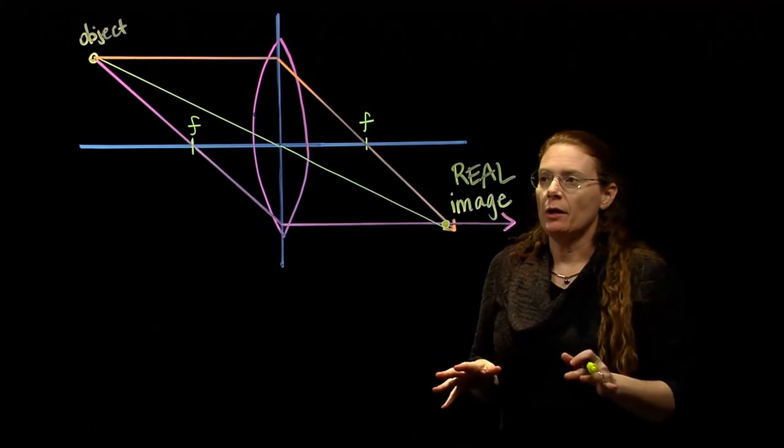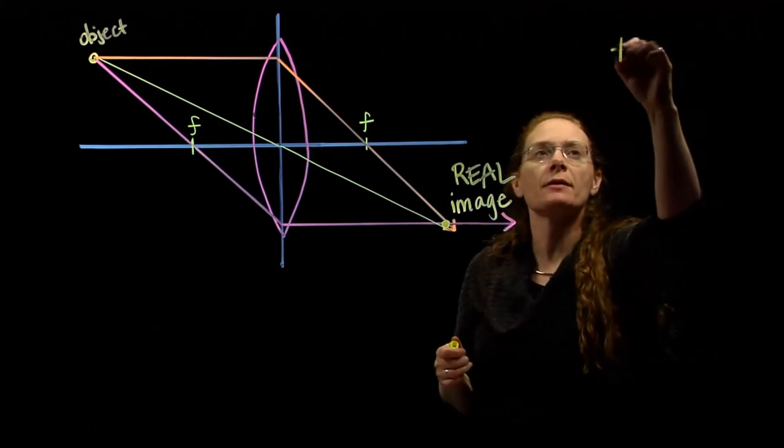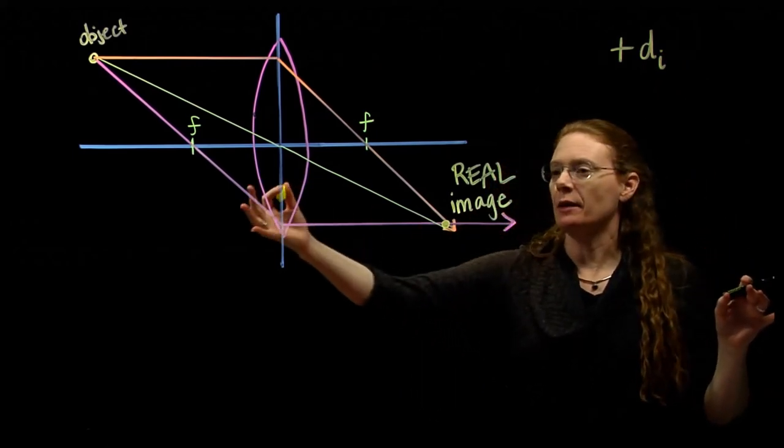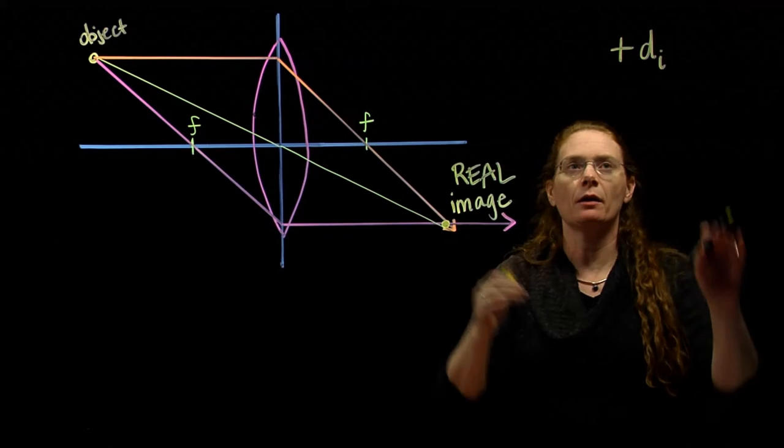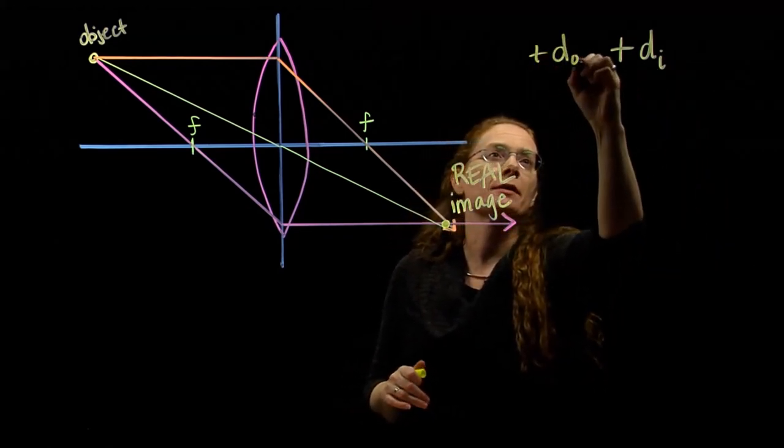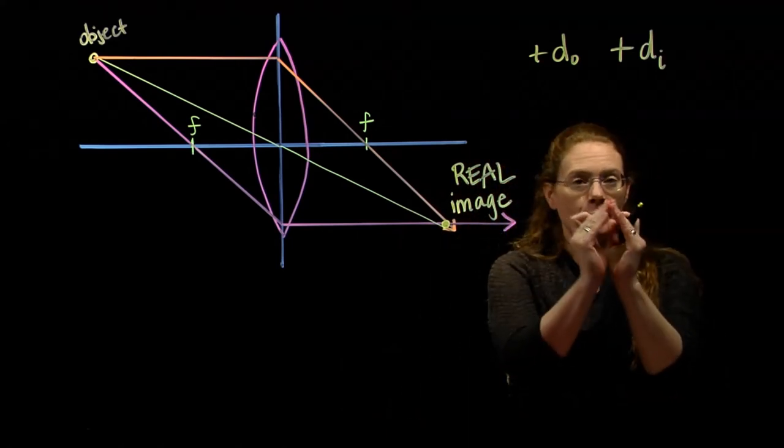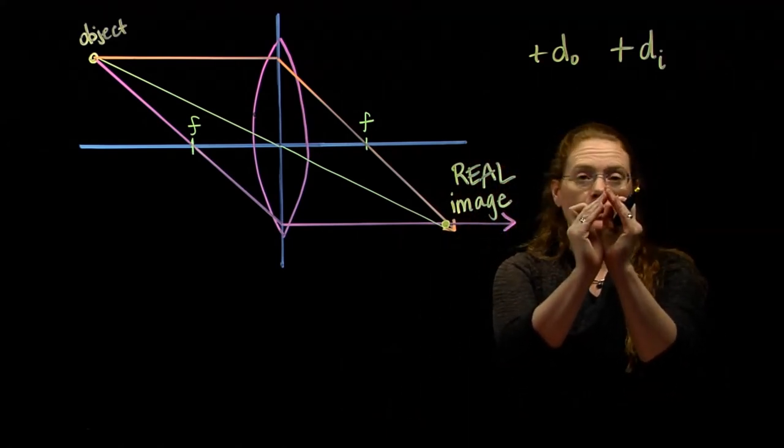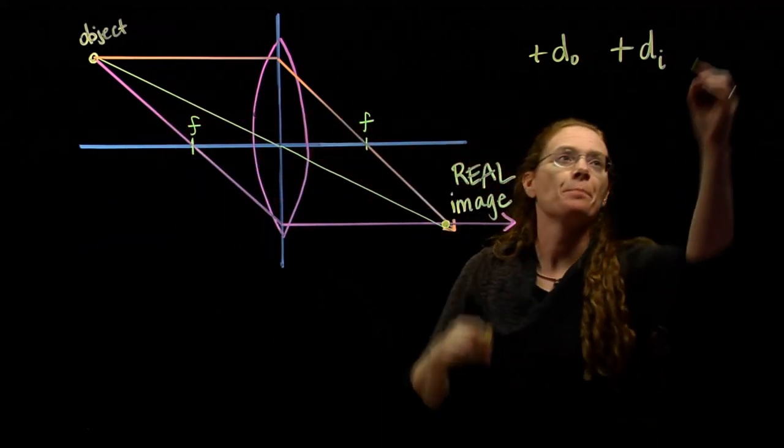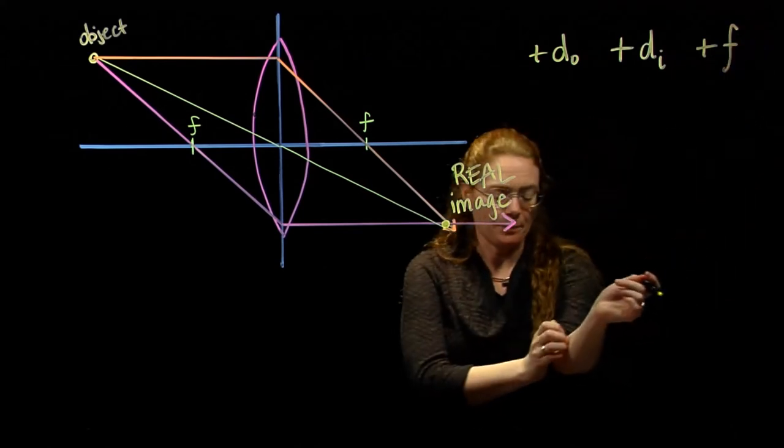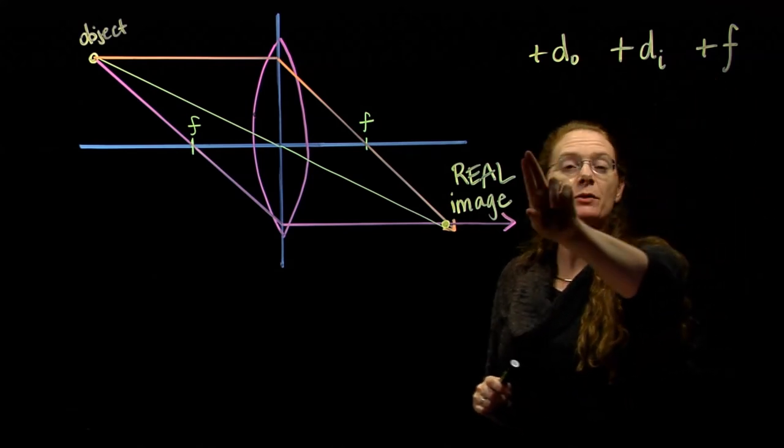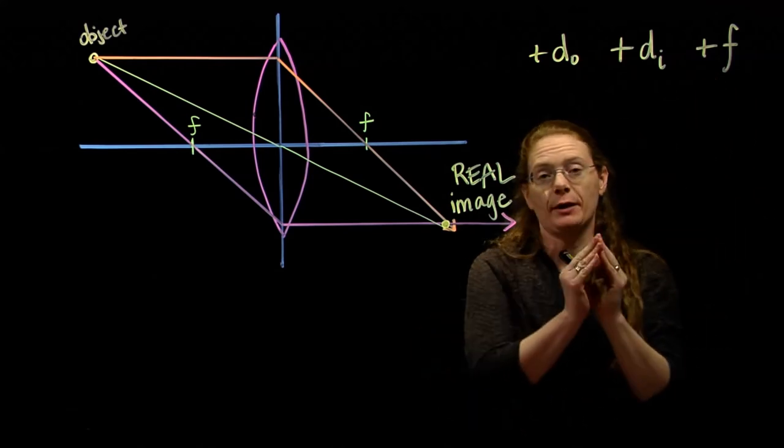With a real image, we can say that we should have a positive image distance. We don't have to do any back tracing, it's a real image, the light is actually here. That's going to give us a positive image distance. We always have a positive object distance to start. And with a converging lens, where the parallel light rays coming through would all actually meet here, we're going to have a positive focal length. So we have positive DO, positive DI, positive F for this real image with a converging lens.